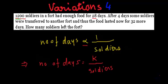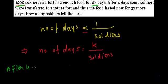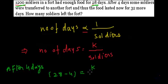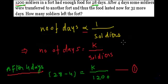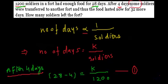We have the fact that food is sufficient for 28 days if there are 1200 soldiers, and the situation remains the same for the first four days. After four days, the number of remaining days will be 28 minus 4, which equals k divided by 1200. So even after four days, if there are still 1200 soldiers, the food will be sufficient for 24 days. Let's call this Equation 1.